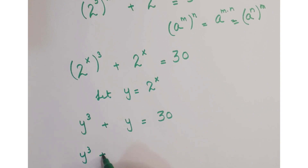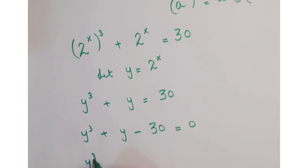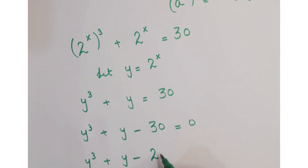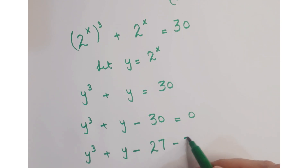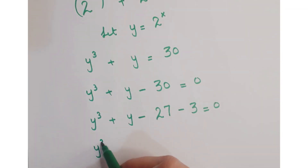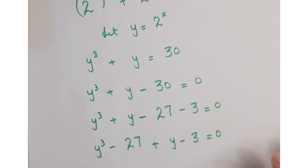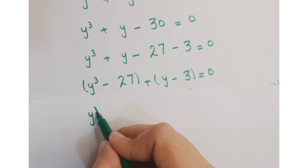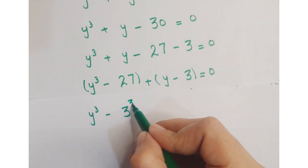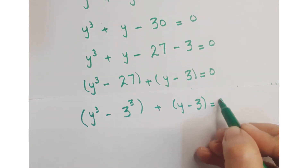We can write this 30 — bring 30 to the left-hand side. We split 30 in such a way that one number is a cube of a number and the other is the remaining. So we split 30 as 27 and 3. Now rearrange the equation as y cubed minus 27 plus y minus 3 equals 0. You can write 27 as a cube of 3, so it becomes y cubed minus 3 cubed plus y minus 3 equals 0.